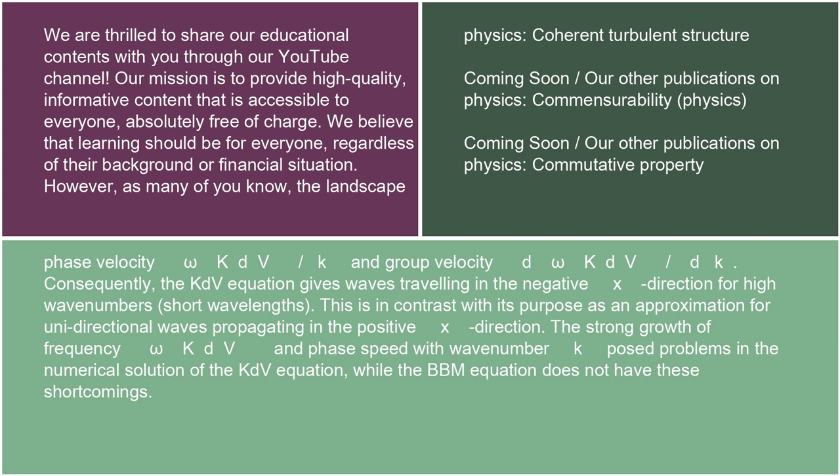This is in contrast with its purpose as an approximation for unidirectional waves propagating in the positive x direction. The strong growth of frequency ω_KdV and phase speed with wavenumber k pose problems in the numerical solution of the KdV equation, while the BBM equation does not have these shortcomings.